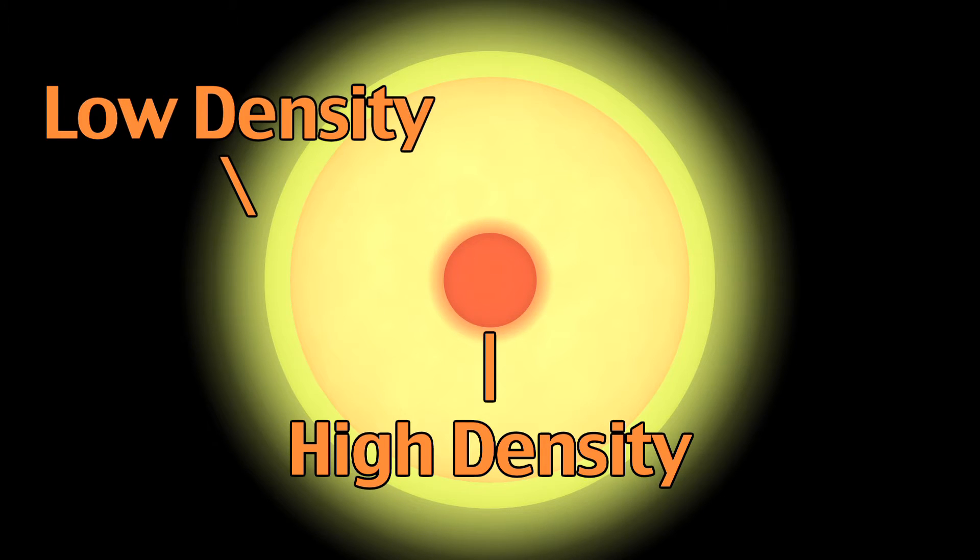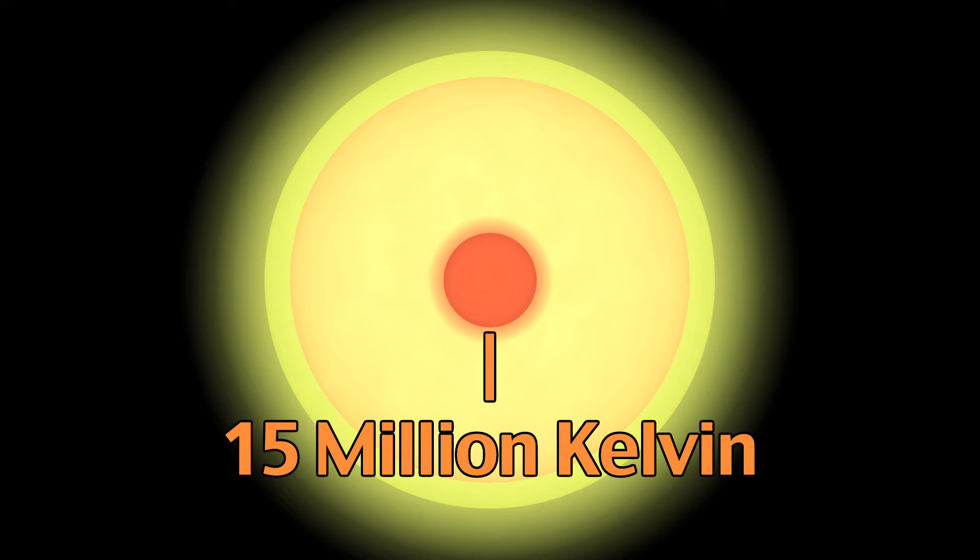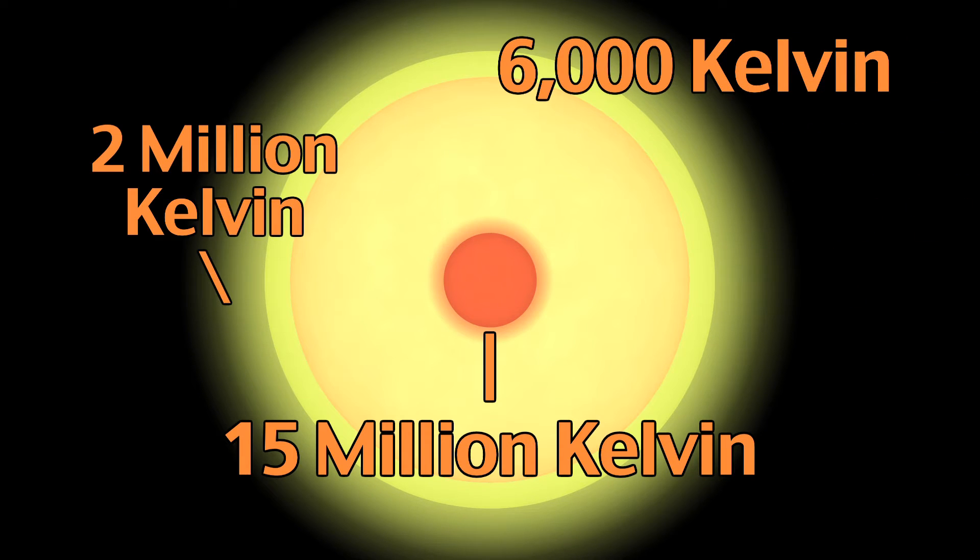The temperature of the sun is about 50 million Kelvin in the core and 6,000 Kelvin in the photosphere. However, it rises back up to 2 million Kelvin in the corona.